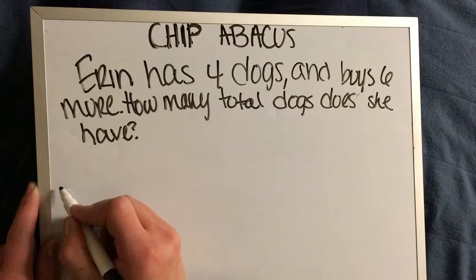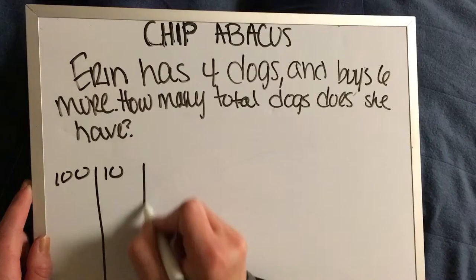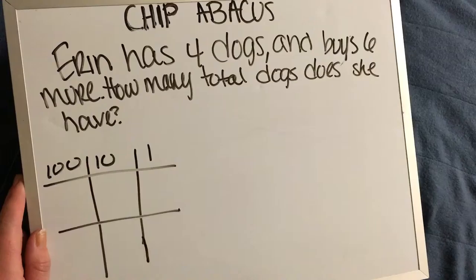All right, so the problem reads: Aaron has four dogs and buys six more. How many total dogs does she have? So the chip abacus, you have three different columns here: you have a hundreds column, tens column, and a ones column.